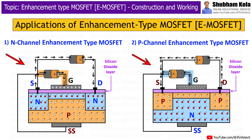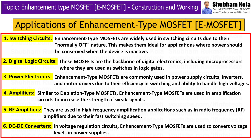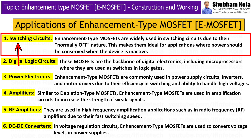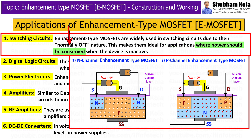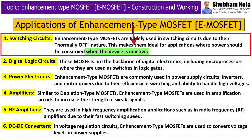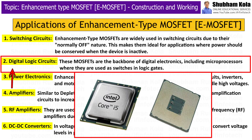Now that we have understood the construction and working of enhancement type MOSFETs, let's look at some applications. First is switching circuits — enhancement type MOSFETs are widely used in switching circuits due to their normally-off nature, making them ideal for applications where power should be conserved when the device is inactive. Next is digital logic circuits — these MOSFETs are the backbone of digital electronics, including microprocessors, where they are used as switches in logic gates.